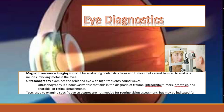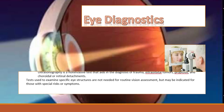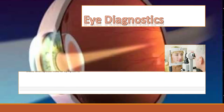An MRI is useful for evaluating ocular structures and tumors but cannot be used to evaluate injuries involving metal in the eyes. Ultrasound examines the orbit and the eye using high-frequency sound waves. Ultrasound is a non-invasive way to test the eye in cases of trauma, intraorbital tumors, ptosis, and choroidal or retinal detachments. Tests used to examine specific structures are not needed for routine vision assessment that the RN performs but may be indicated with special issues.